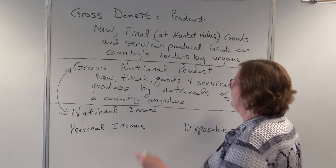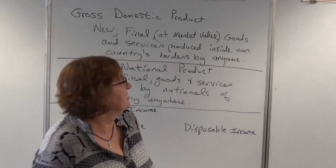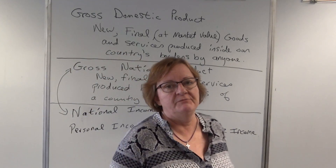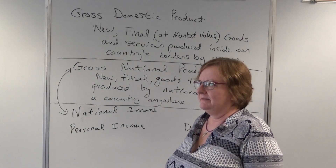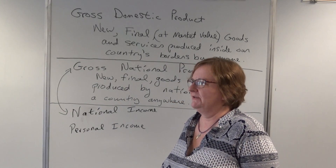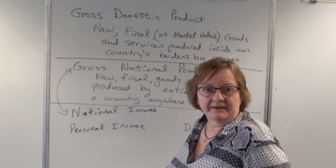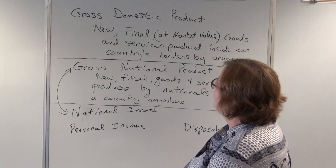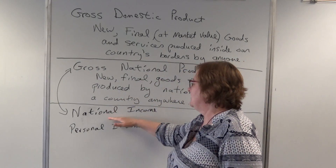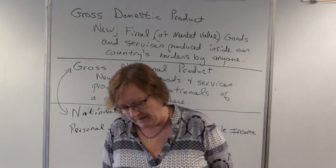Since this is the USA, gross national product would be goods produced by Americans anywhere. These measures were invented in the United States and spread throughout the world. As industrialized countries and then lesser-developed countries adopted them, most countries chose gross domestic product. We were using gross national product because it's easier to reconcile with national income.